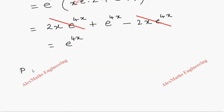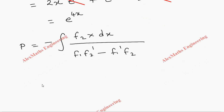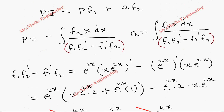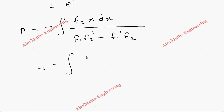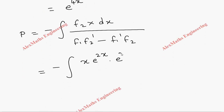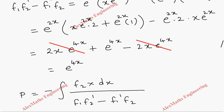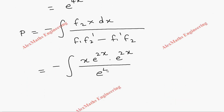Now we calculate p, which is minus integral of f2 times X dx, divided by the denominator. Substituting: f2 is x e^(2x), and X (the right-hand side function) is e^(2x). So the numerator becomes x e^(2x) times e^(2x), which is x e^(4x). The denominator is e^(4x). The e^(4x) cancels and we are left with x.